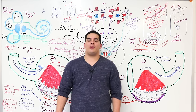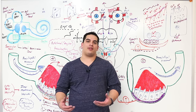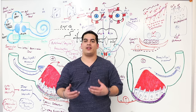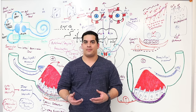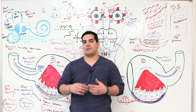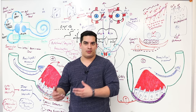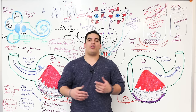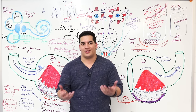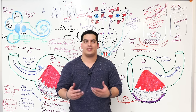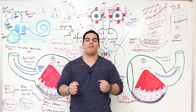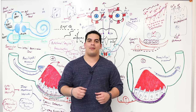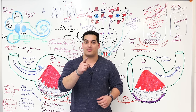Alright Ninja Nerds, we've covered the semicircular canals, the vestibulo-ocular reflex, and benign paroxysmal positional vertigo. I hope all of this made sense. If you enjoyed it, please hit that like button, comment down in the comment section, and subscribe.